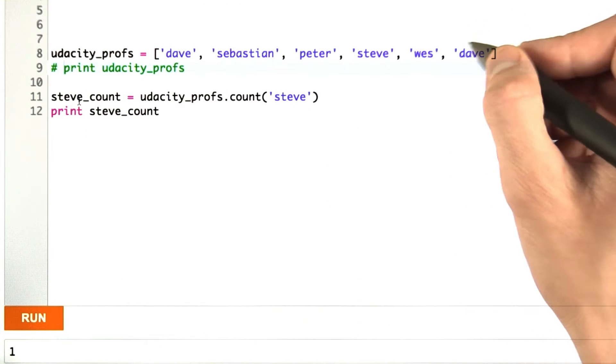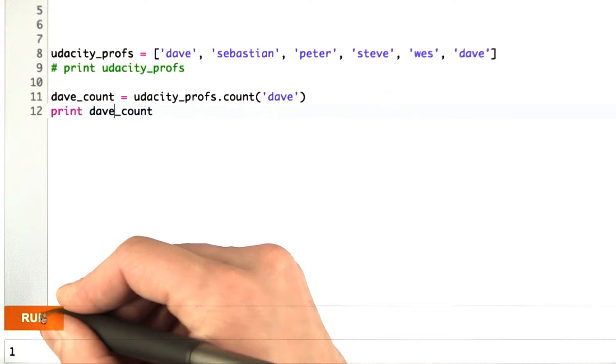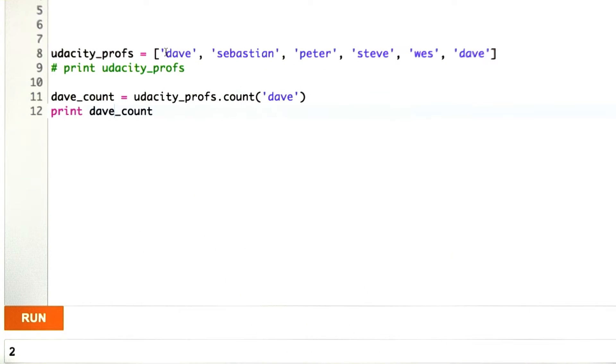We could also count the number of occurrences of Dave, and when I run this, I get 2, as expected. Dave and Dave.